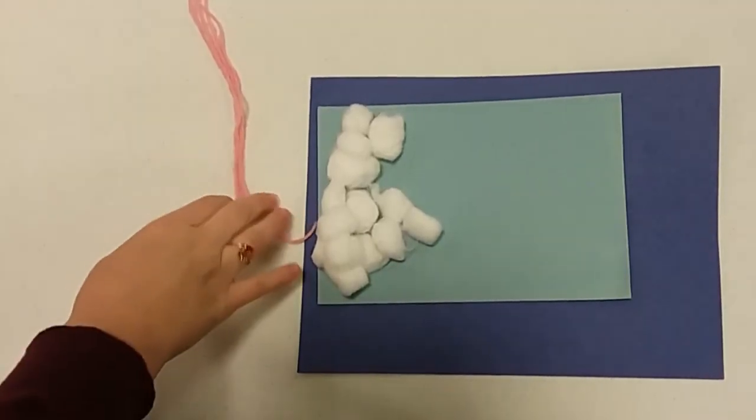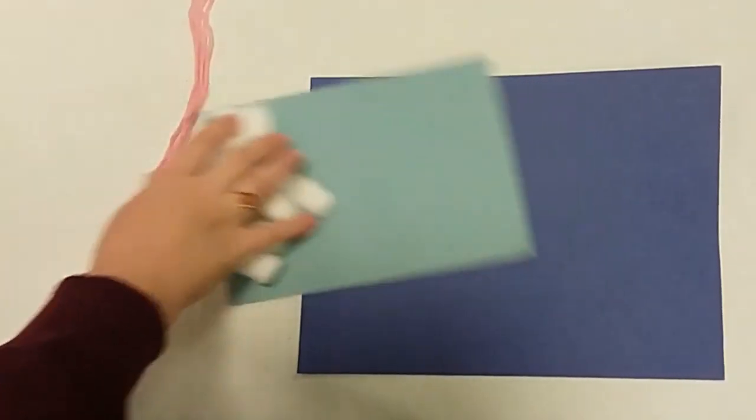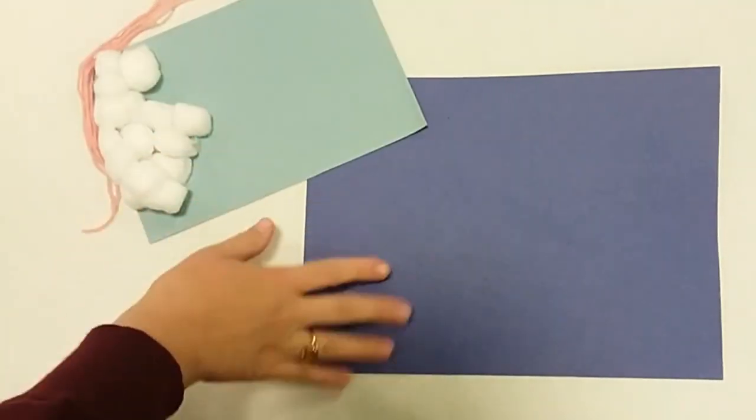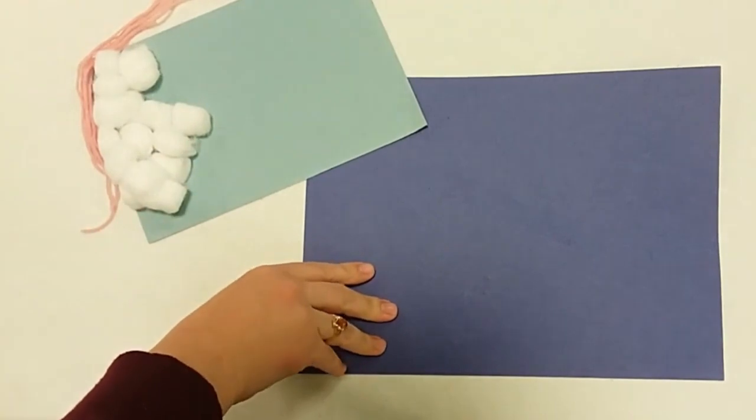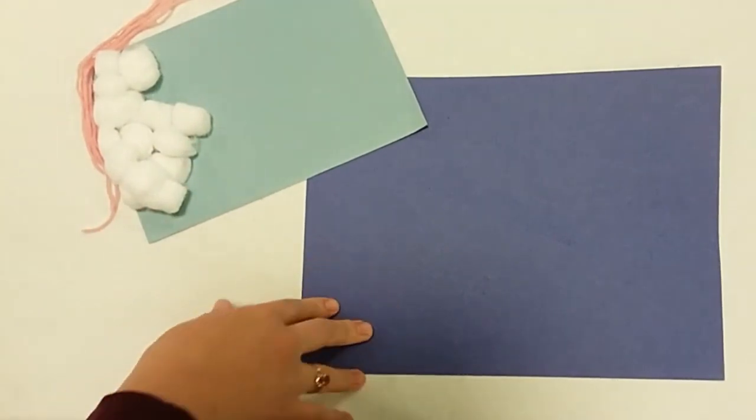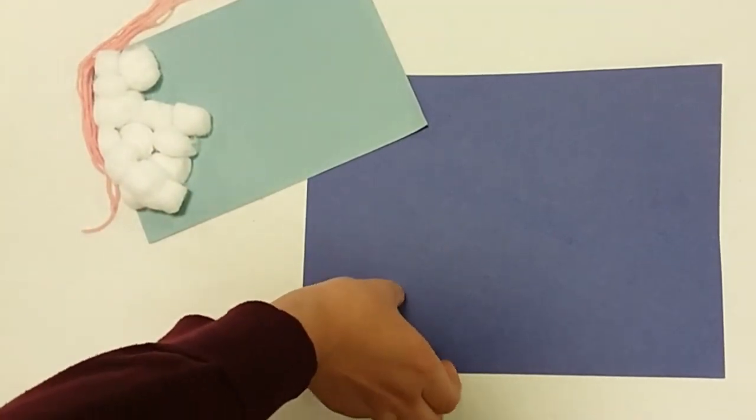In your activity kit you have yarn, cotton balls, light blue paper, and a large piece of dark blue construction paper. We're going to start first with making the raindrops and gluing them onto the string.